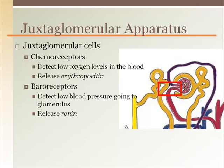The baroreceptors detect the pressure of the blood going to the glomerulus. If the pressure is too low, renin is released. Renin ultimately increases pressure to maintain adequate filtration.